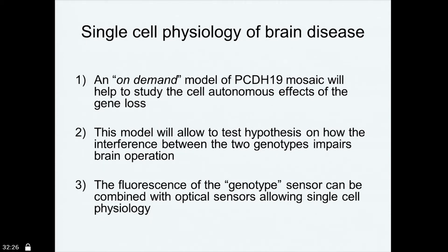So what are we going to do? We are going to have an on-demand model of PCDH-19 mosaicism. One aspect I think is interesting is that the mosaicism can actually be quite focal — in principle you can have only a few columns of mutations, leading to a very localized mosaic for PCDH-19, somewhat resembling what may happen in focal cortical dysplasia. Just by titrating the injection, you can easily model this sort of behavior. This model will allow us to test hypotheses as the basis of the interference model — you can do patch clamp on a red neuron, study their connectivity with the red and the green neuron, and all possible combinations.